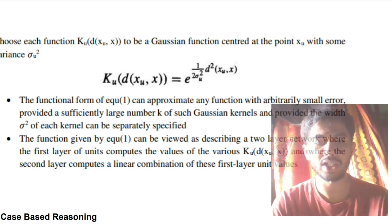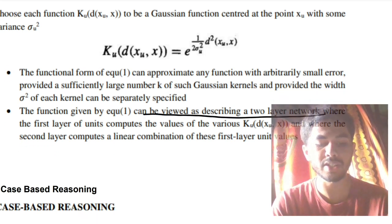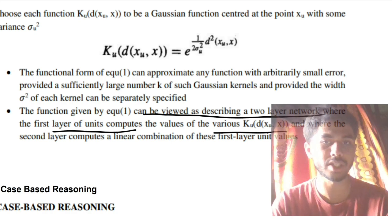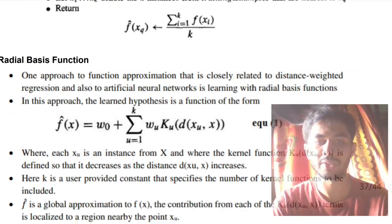After that, it performs two functions. The first function is that it can approximate any function with small error, given that there is a large number of k values and provided with σ² of each value. And the second thing is, once the first layer calculates something, the second layer will use those values to calculate the second layer final outputs. These points you have to write for the radial basis function.